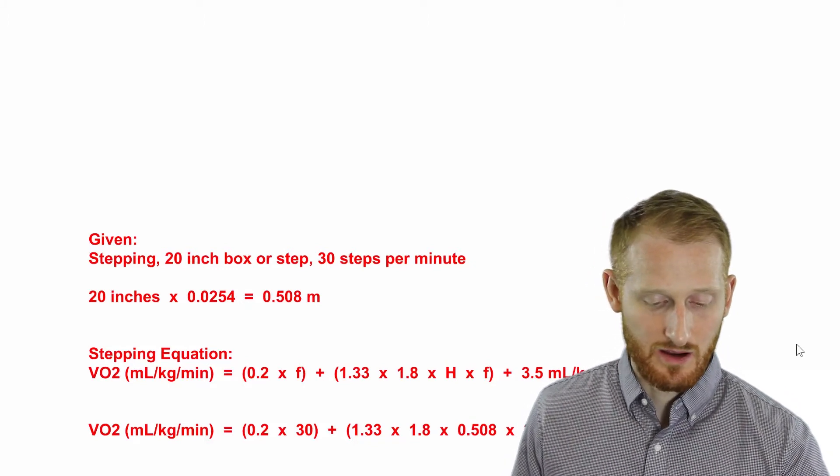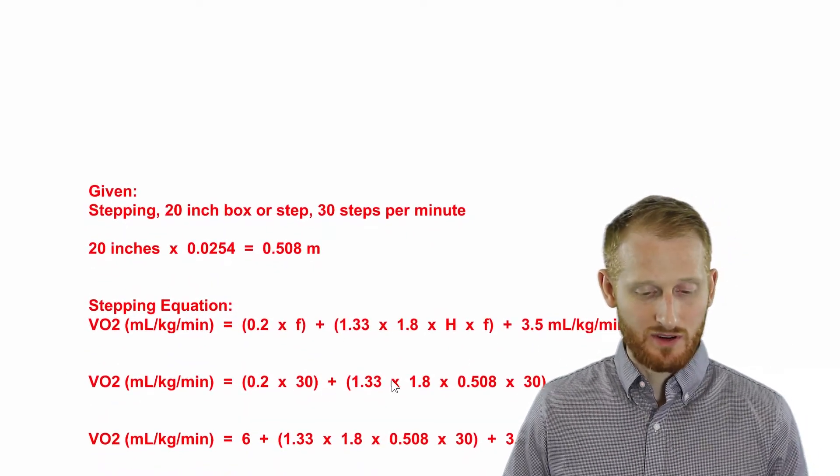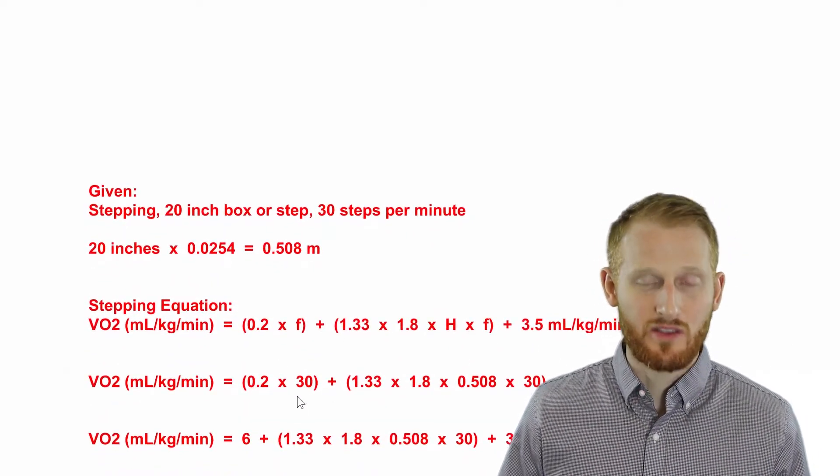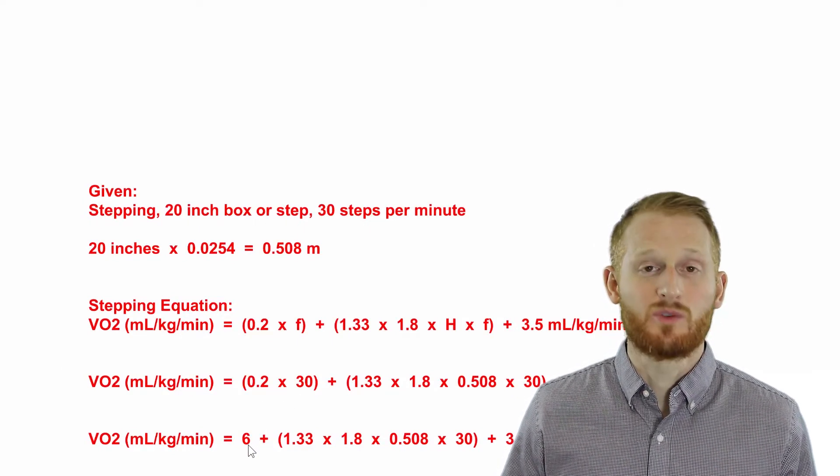All right, so that's everything thrown into there. So let's start doing some of the actual math here. First thing I'm going to do is work on this first set of parentheses. So the 0.2 times 30, multiply that, and you end up with 6.